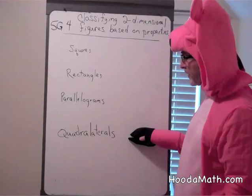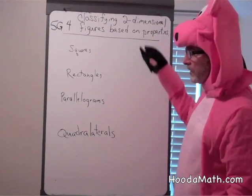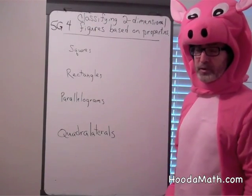Parallelograms are quadrilaterals, rectangles are quadrilaterals, and squares are quadrilaterals. Why? They all have four sides.